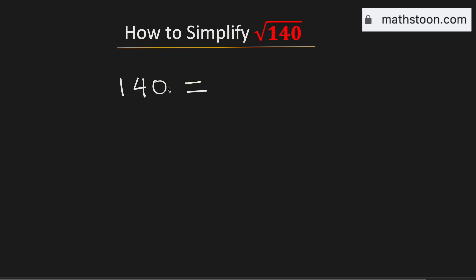We know that 140 can be written as 4 times 35. Among these two numbers, 4 is a perfect square, which is a square of 2.